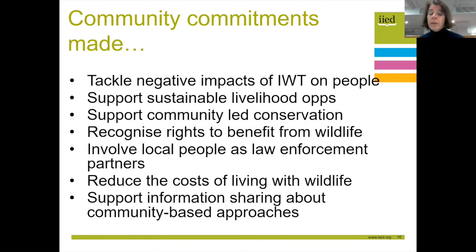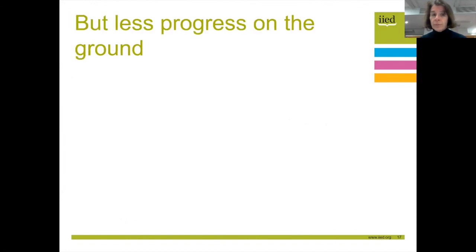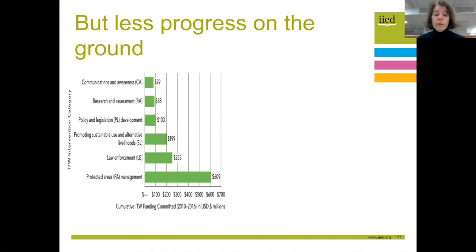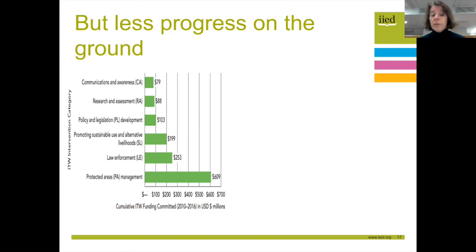Our People Not Poaching database is very specifically intended to help support this information sharing. However, despite all these great commitments in policy statements, there has been far less progress on the ground. A World Bank analysis of funding for illegal wildlife trade between 2010 and 2016 shows that a huge proportion of that funding was allocated to law enforcement and protected area management, with only a very small proportion going to promoting sustainable livelihoods — less than 13% of the total to date has gone to supporting communities.